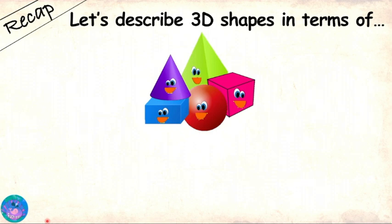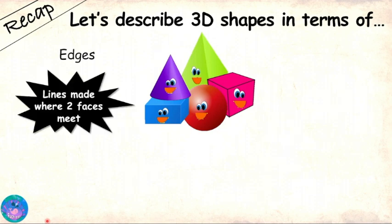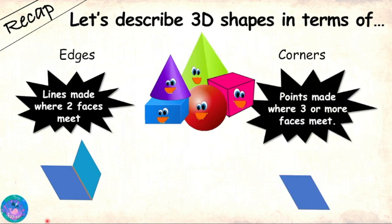We will also see how many edges and corners the shape has. An edge is a line formed when 2 faces meet, and a corner is the point where 3 or more faces meet. Last time we met a cube and a cuboid. I wonder who we will meet today. I think I hear the first one coming.